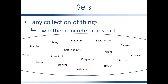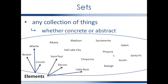This is a set of U.S. state capitals, and I've only shown a portion of the set here. So Atlanta, Boston, Denver, Santa Fe, Austin, and Madison — these are elements of the set of U.S. state capitals.